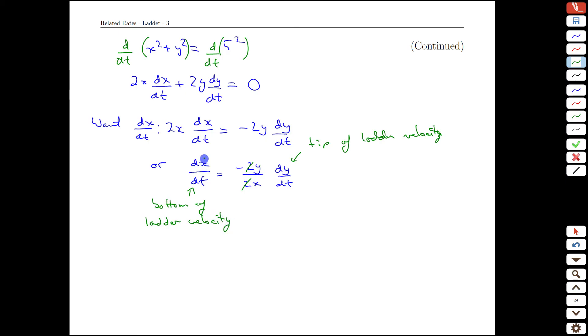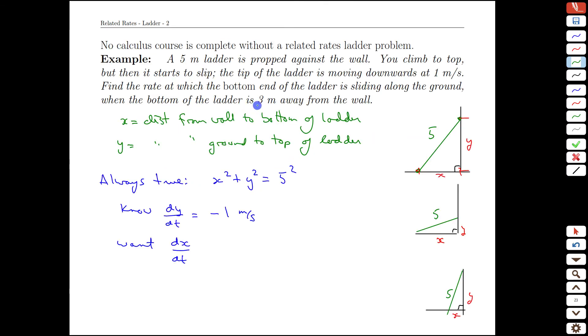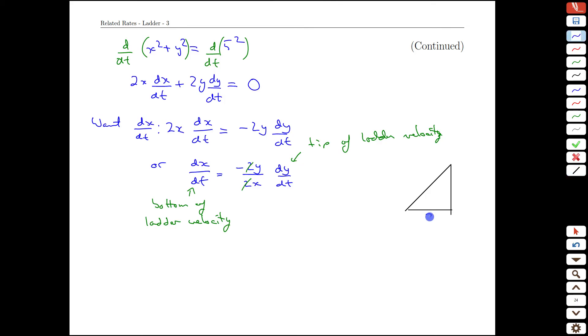Going back to the question, we're asked to figure out this bottom velocity when the bottom of the ladder is 3 meters away from the wall. Notice the bottom of the ladder is away from the wall, that's exactly what x means. When the base is 3 meters away from the wall, the y value isn't given in the question, but we can sort it out. Because 3 squared plus y squared equals 5 squared. So y squared is 25 minus 9, y squared is 16, or y is 4. So at the moment where x is equal to 3, that told us that y was equal to 4.